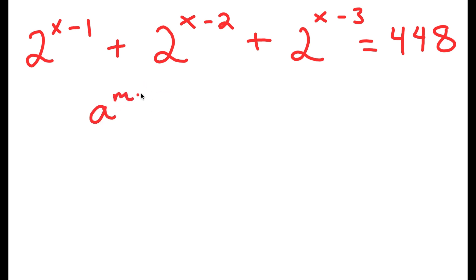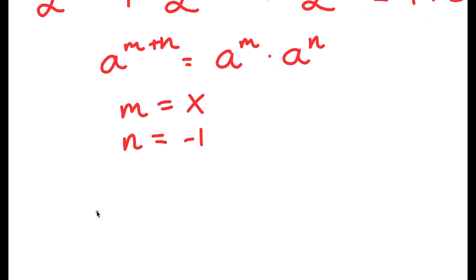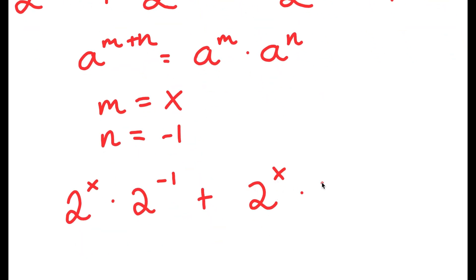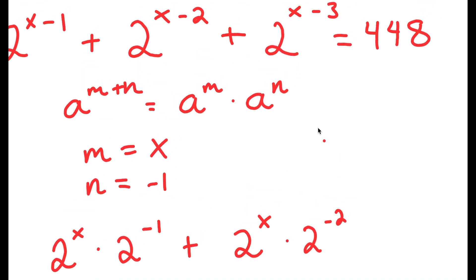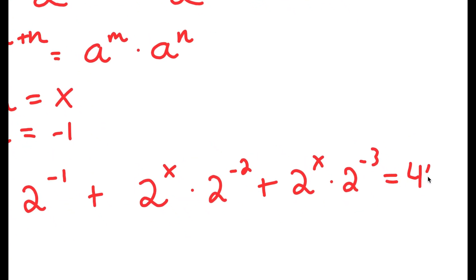Now, if I have a to the power of m plus n, this is equal to a to the power of m times a to the power of n. So in this case, m is equal to x and n is equal to negative 1 for 2 to the power of x minus 1. That's going to turn into 2 to the power of x times 2 to the power of negative 1. Similarly, 2 to the power of x minus 2 equals 2 to the power of x times 2 to the power of negative 2, and 2 to the power of x minus 3 equals 2 to the power of x times 2 to the power of negative 3. This all equals 448.